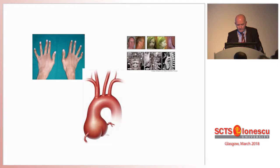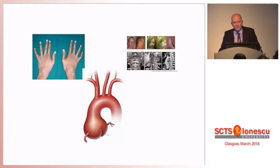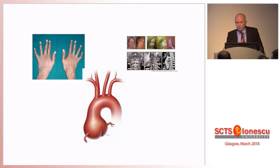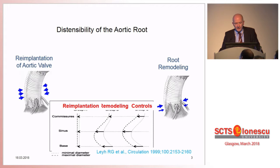Connective tissue disorder is a difficult disease, whether it's Marfan or the more complicated Loeys-Dietz or some other forms. The common denominator is anulo-aortic ectasia, that is root aneurysm, which is usually associated with annular dilatation. We do have two techniques that can be used.